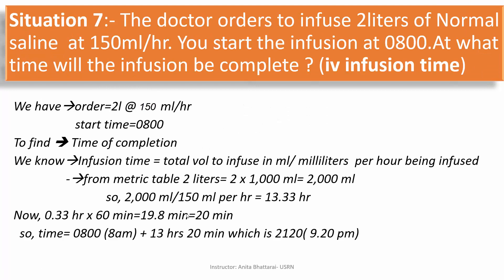Let's see the next situation — situation 7. The doctor orders to infuse 2 liters of normal saline at 150 ml per hour. You start the infusion at 0800 (8 am). At what time will the infusion be completed? This is an IV infusion time calculation. The formula is: infusion time equals total volume to be infused in ml divided by ml per hour being infused.